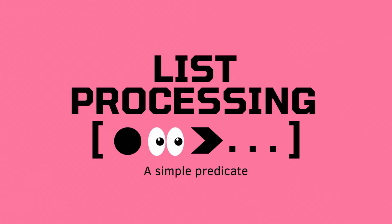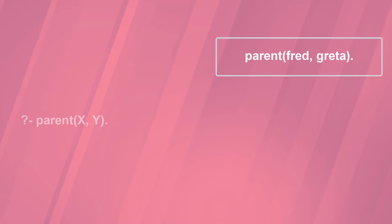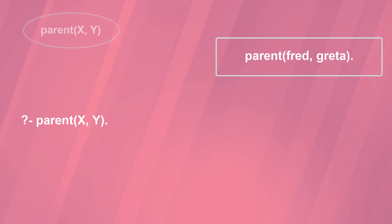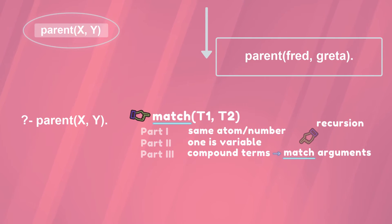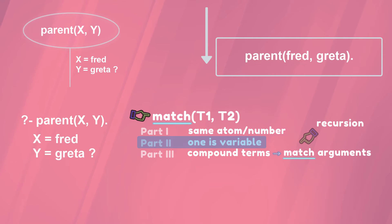Let's look at list processing using a simple program. First, a review. Prolog's matching and search: with a program in memory, for any query, Prolog searches from the top down using matching on each clause. The matching process can give variable bindings. In this simple example, two variable bindings are offered to the user. If the user accepts these, the query succeeds.